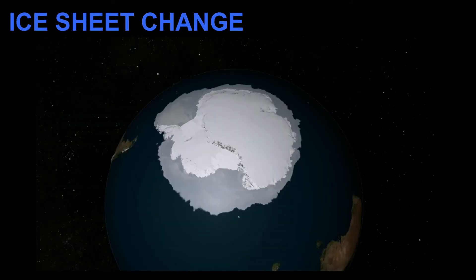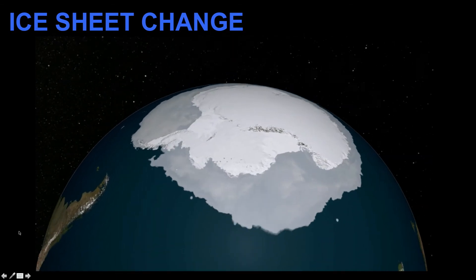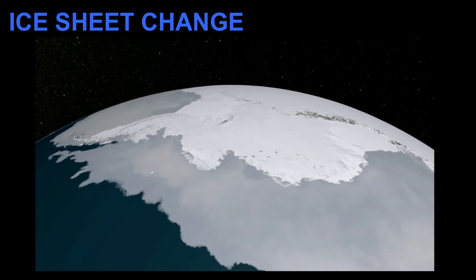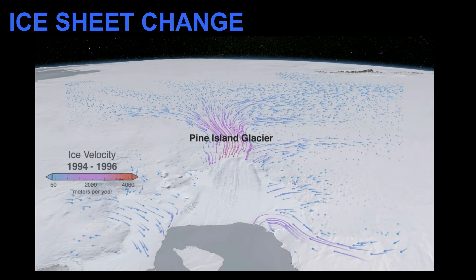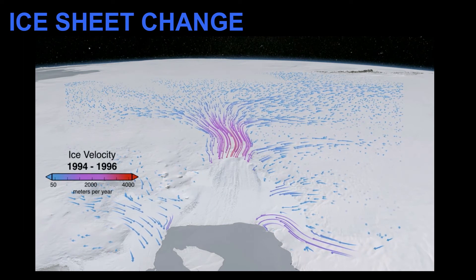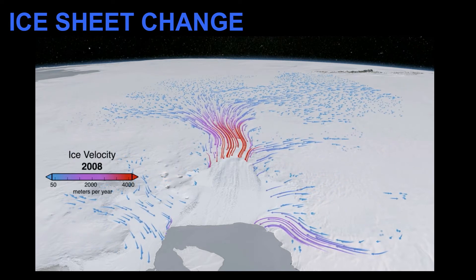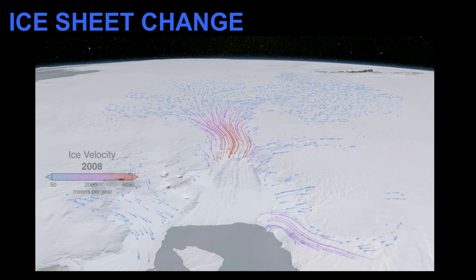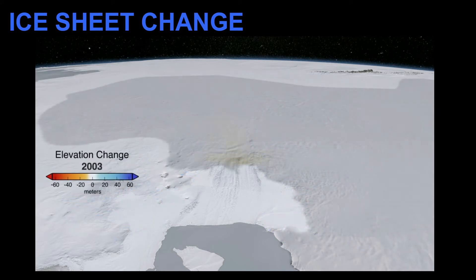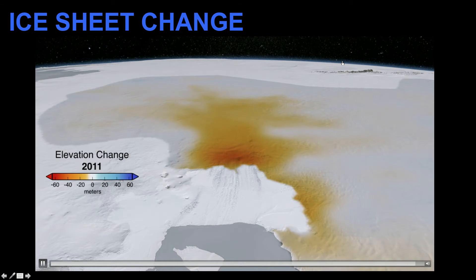I'm going to talk about three ways that we can measure from space how the ice sheets are changing. The first video shows you zooming in on a region in West Antarctica called Pine Island Glacier, and the first thing you'll see is velocity data from the mid-90s — you can tell it's speeding up as time goes on, so more ice is flowing from the middle of the continent out towards the ocean. The second measurement you can make from space is height change: as you go on in time, red indicates thinning, and you can see the ice sheets are thinning in the places where they're flowing faster.